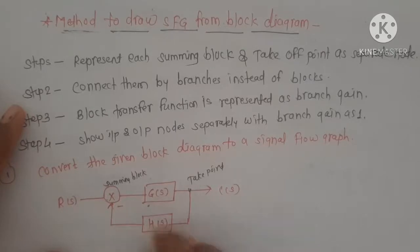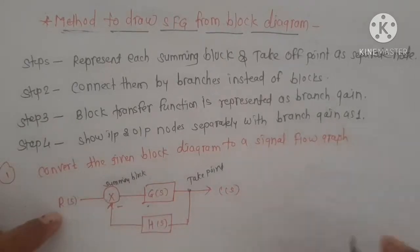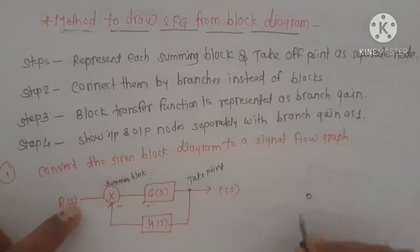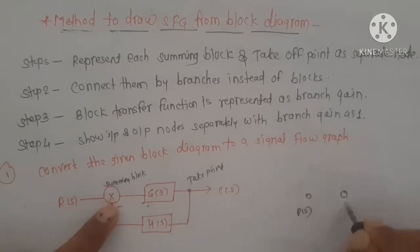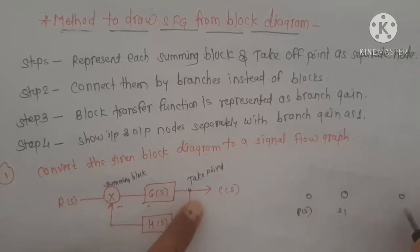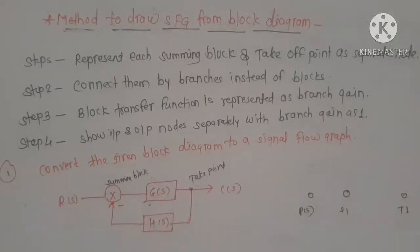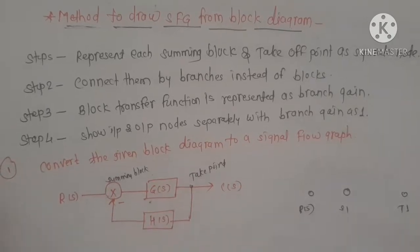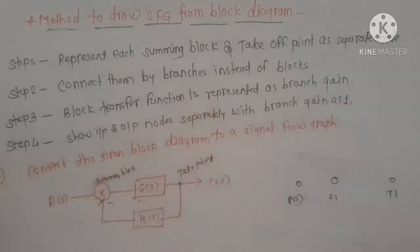We have to mark them as separate nodes. Input and output nodes are separately represented with branch gain 1. R of S is the input node, after that the summing block is represented as a separate node S1. When the takeoff point is present, we represent it as T1. And lastly, C of S is the output node. So the first step is to mark the nodes. After that, the block transfer function is represented as a branch gain — whatever value is present inside the block is represented as branch gain.